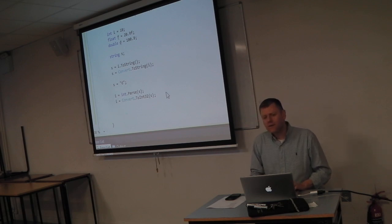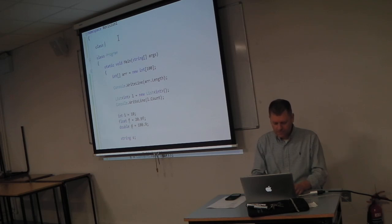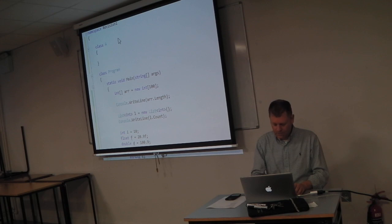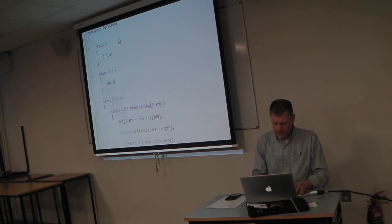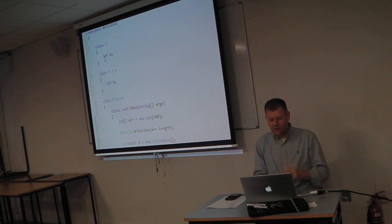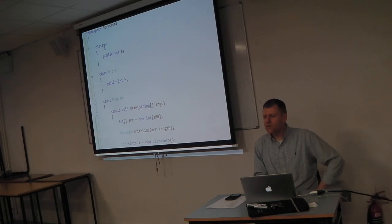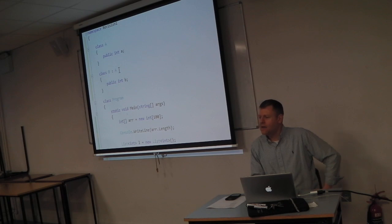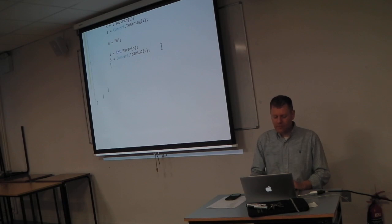I'll do an example of upcasting and downcasting. I have class A with a public int a, and class B : A with a public int b. Then class C : A. Now I have two classes that extend A. Something like: A a = new B() — here a's type is A but its instance is B. This is okay, like saying a dog is a mammal, so when creating a mammal it can also be a dog. This is polymorphism.